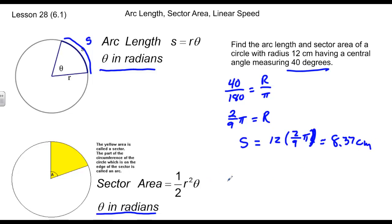The area is equal to one-half times 12 squared, once again, times two-ninths pi. Plug that into a calculator one more time, and we get an answer of 50.27. That'll be square centimeters because it's an area.